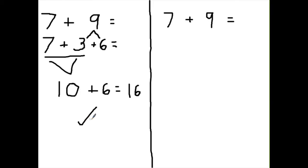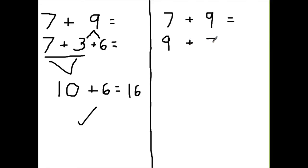This is an excellent way of solving the problem — there's nothing wrong with it, it will work every time. But let's look at an alternative: maybe when I saw a 7, I didn't know how to make 10, but I saw a 9 and knew how to make 10 with it. So we're going to switch these numbers because it makes it easier. This is called the commutative property of addition — you can flip these numbers around and it will equal the exact same thing.